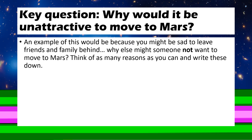Here's your next task. You can jot this down in a jotter, on paper, or type it up. Think about why it would be unattractive to move to Mars — in other words, what are some reasons why people wouldn't want to do it? This might be a much easier question to answer. For example, you'd be sad to leave your friends and family behind. Try to come up with a couple of other reasons of your own. Just come up with as many as you can and write them down. Bullet points are absolutely fine for this task — you don't have to write full sentences.